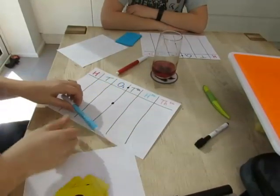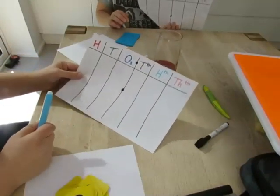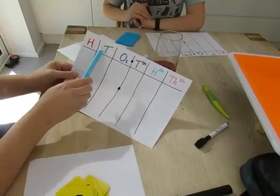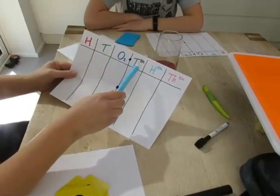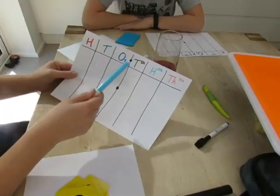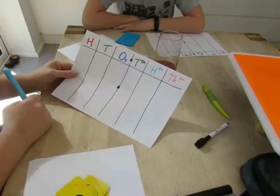For this game you need a place value chart. I'm playing with Luke who's in year five, so we've got a year five number range. We have hundreds, tens, ones, tenths, hundredths, and thousandths, but you could make this thousands, hundreds, tens and ones, or hundreds, tens and ones if you want to—it really doesn't matter.